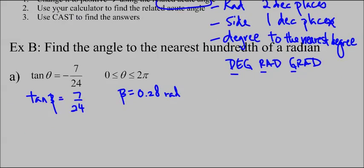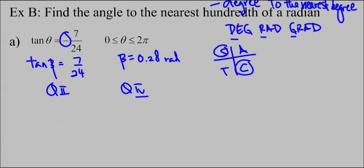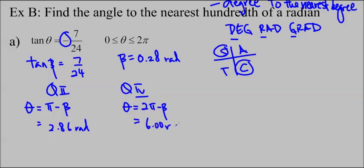When you type it into your calculator using brackets for 7 over 24, you should get beta equals 0.28 radians. I'm rounding to two decimal places. Then you have to think about which quadrant it's in. We used our calculator to find the related acute angle, and we're going to use CAST. My original has a negative, so I know I'm in quadrant 2 and quadrant 4. I will take off marks if you don't write this down. In quadrant 2, it's pi minus beta, which is 2.86 radians. For theta in quadrant 4, we're doing 2 pi minus beta, which is 6.00 radians. Those are our two solutions.